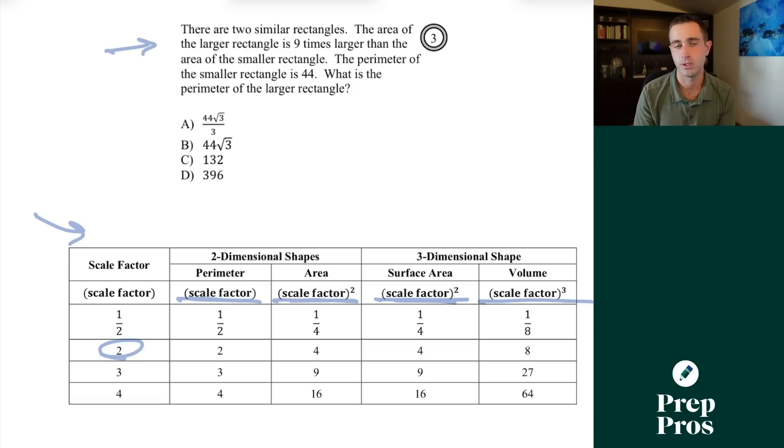Now, sometimes we'll have to go backwards. So here, if we see there are two similar rectangles, the area of a larger rectangle is nine times the area of the smaller rectangle. If we know our area multiples, we would take the square root of that to work our way back to the scale factor. So what this really tells us is the side lengths when the area is nine times greater are actually three times greater. Therefore, if the perimeter of the smaller is 44, the perimeter of the larger is going to be 44 times three, or 132.